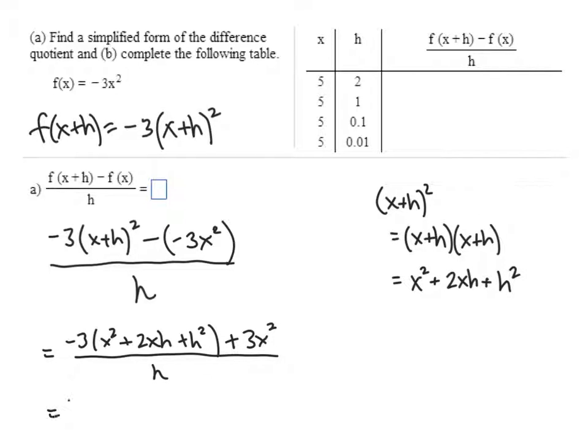Okay, so now we're going to distribute that negative 3. So negative 3x squared minus 6xh minus 3h squared plus 3x squared all divided by h. Now notice that we're going to get a little bit of simplification. This negative 3x squared is going to cancel with that plus 3x squared.